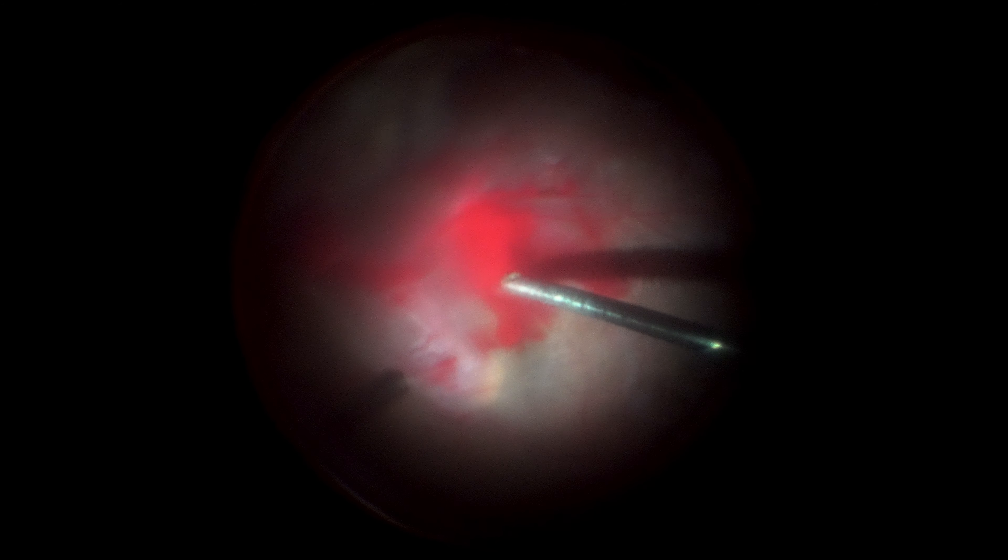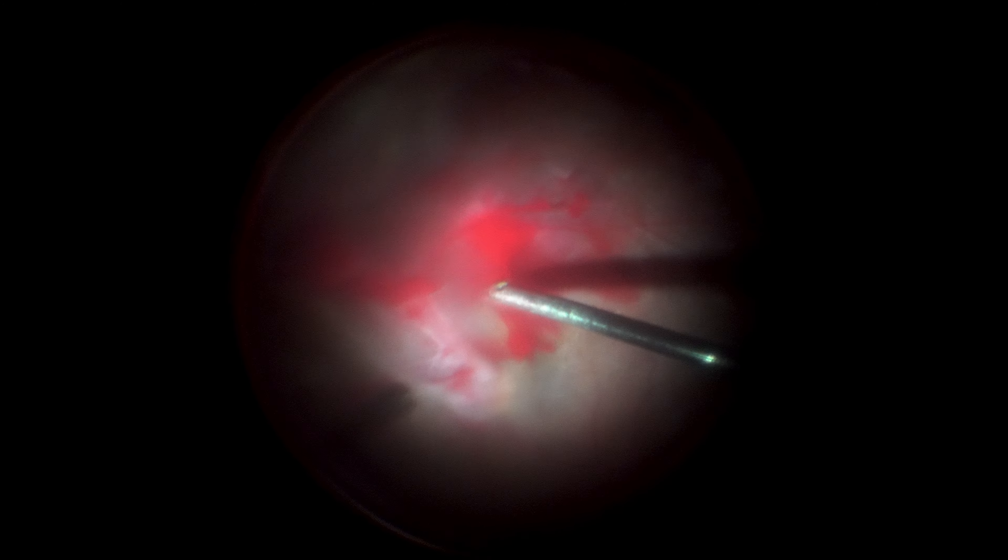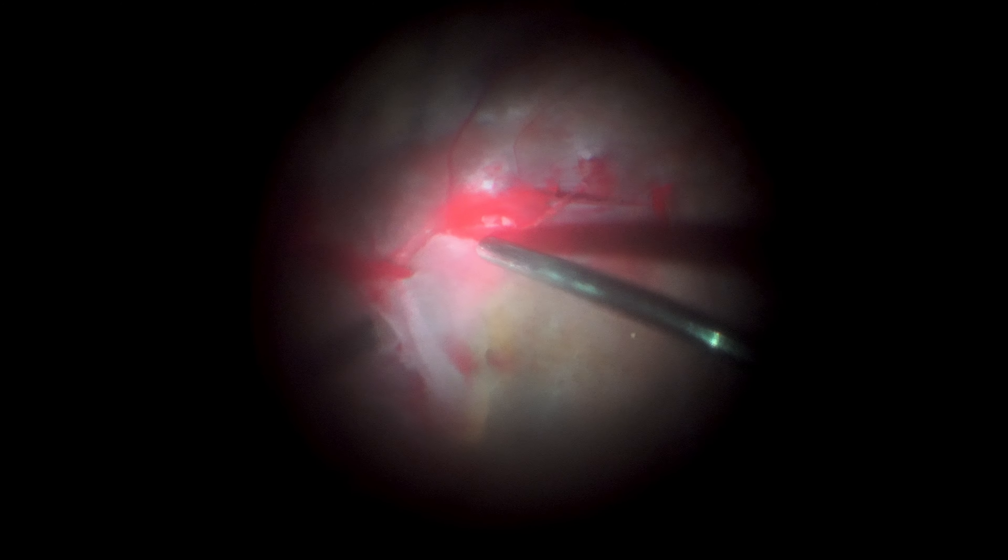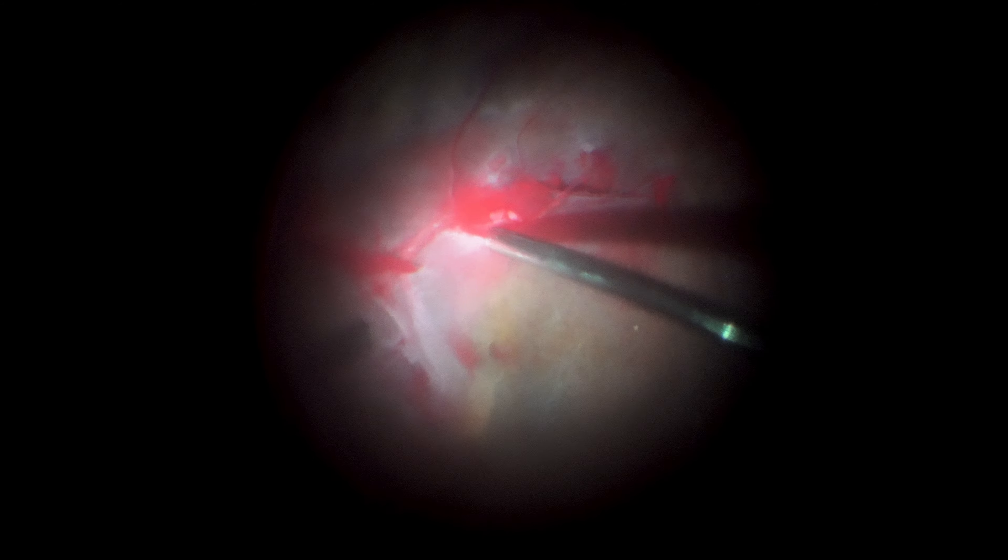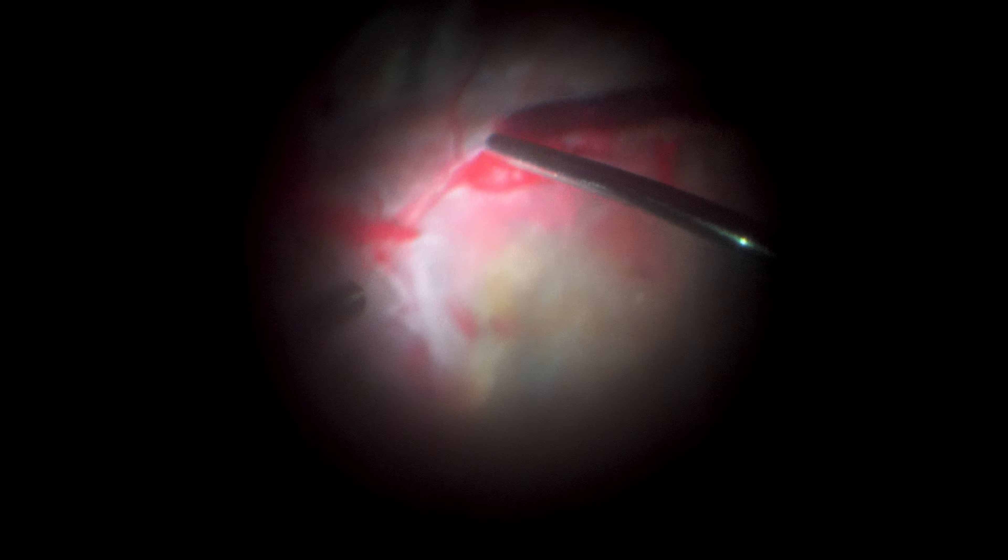A backflush cannula is used to remove blood passively. The light pipe helps with blood aspiration, bringing small clots to the backflush cannula tip. Raising intraocular pressure helps control bleeding at this time. The smaller 25-gauge tip cannula is oftentimes safer and avoids pulling on the retina.